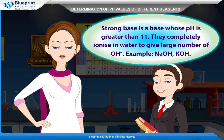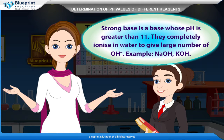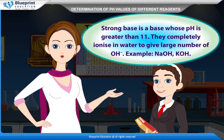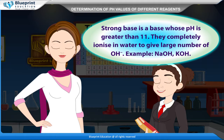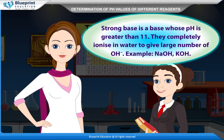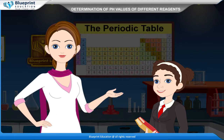A strong base is a base whose pH is greater than 11. They completely ionize in water to give a large number of OH- ions. Examples: NaOH, KOH.